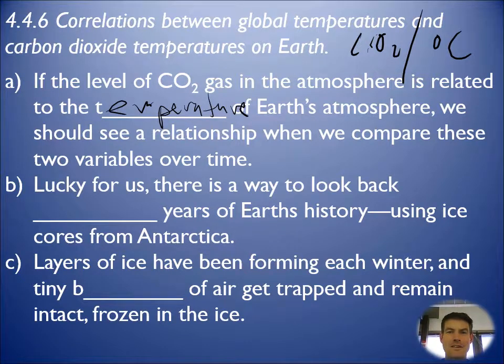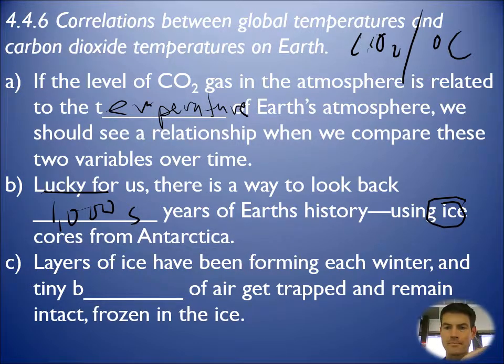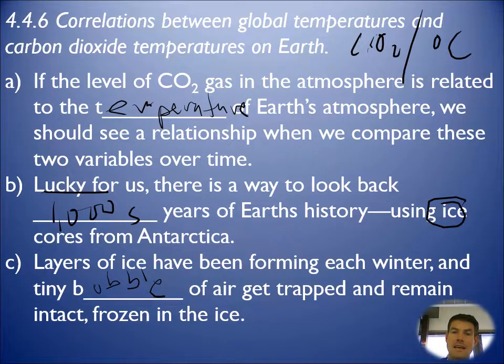And lucky for us, we can look back thousands of years of Earth's history by looking at ice cores. It's pretty cool stuff. Ice has been falling in Antarctica for a long time. Every winter, there's a new layer of snow. You can go back just like on a tree, count layers and look back how far that core has been around. When that ice forms and freezes, a tiny bubble of gas is trapped in it.